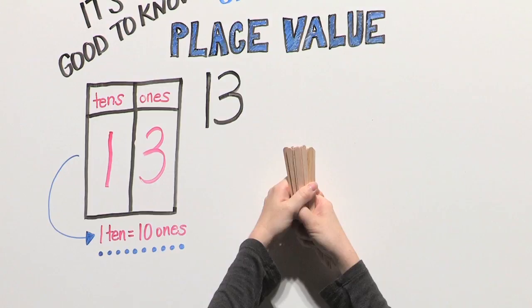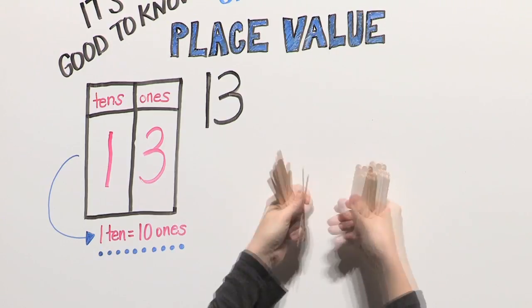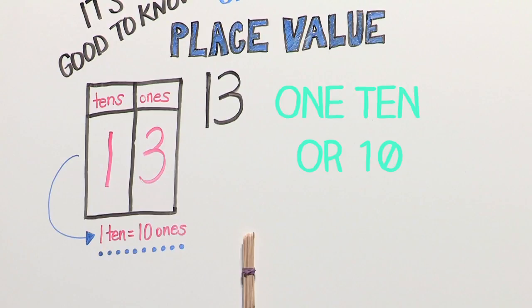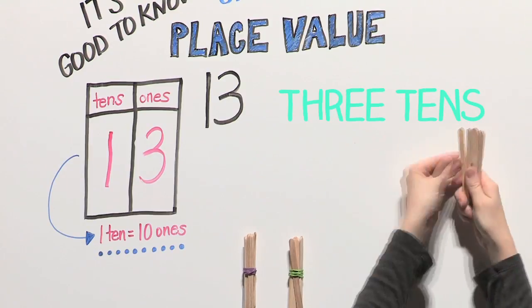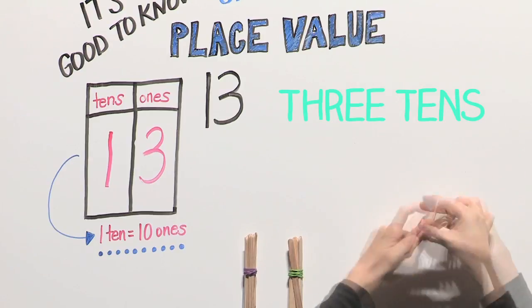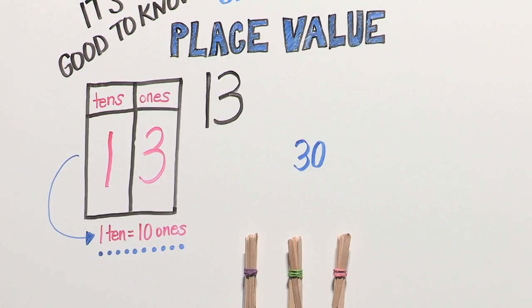Here are some popsicle sticks. Let's group them into bundles of ten: one ten, two tens which equals 20, three tens which equals 30. We have three bundles. Help your child to think of 30 as three tens and zero ones.